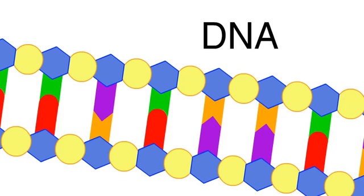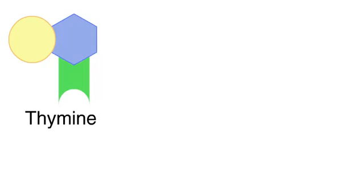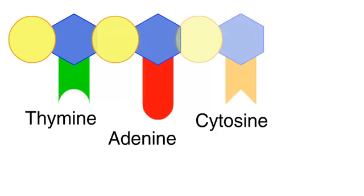DNA is a type of nucleic acid made up of four bases: thymine, adenine, cytosine, and guanine.